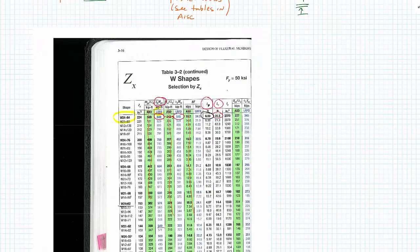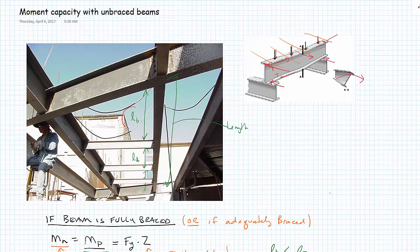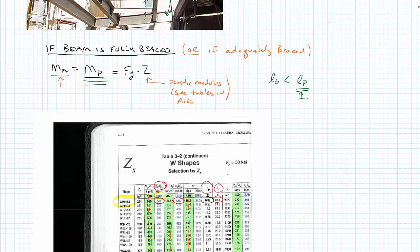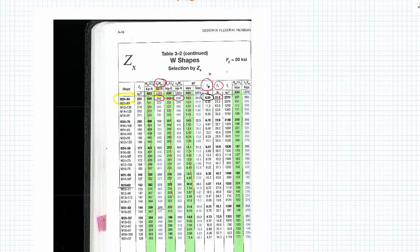If we jump back up here and look at this beam, we'd go into the curve with LB, which is the biggest of any of these unbraced lengths. We'd take that number, we would come into this here, and we'd compare it to LP. If LB is less than LP, we can consider it fully braced, and we can use the full phi MP.